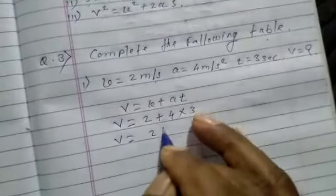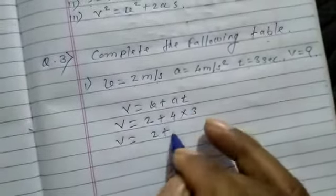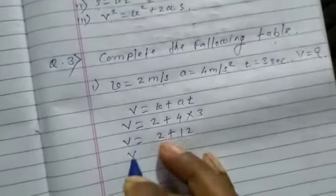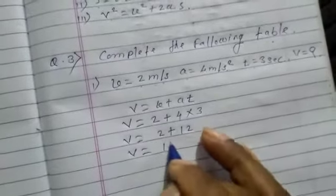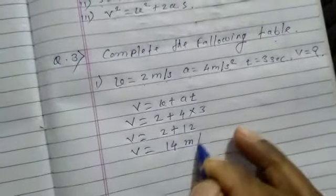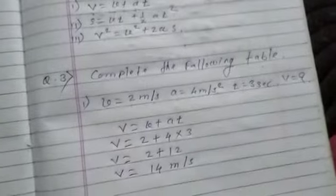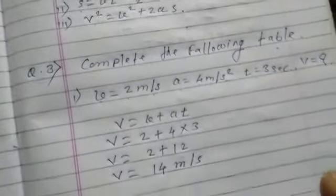Therefore v equals 2 plus, 4 into 3 is 12, so v equals 2 plus 12 equals 14 meter per second. In this way you can solve question number 2.